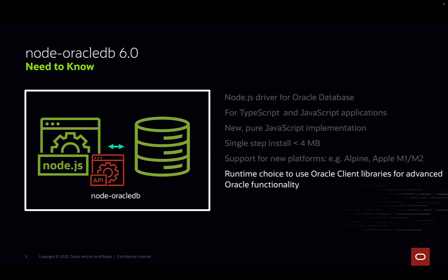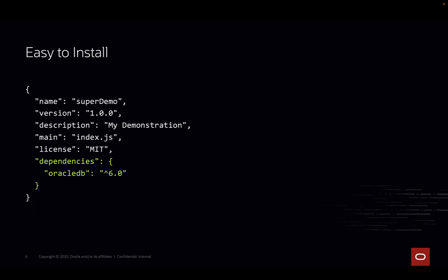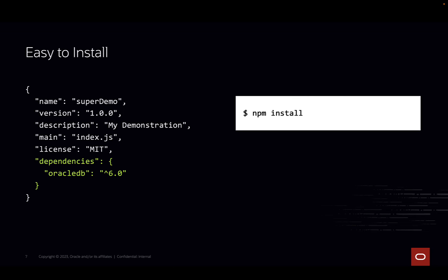Some advanced Oracle Database functionality can be used if the client libraries are installed. The license continues to be an open source license, and the source code is on GitHub. The Node Oracle DB package is hosted in the NPM repository, so installation is easy — just add a dependency on Oracle DB to your package.json file, and then run NPM install in a terminal window.